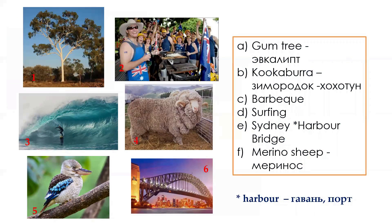Let's see the answers. Gumtree is picture number one. Kookaburra, picture five. Barbecue, picture two. Surfing, three. Sydney Harbour Bridge, six. And Merino sheep is four.